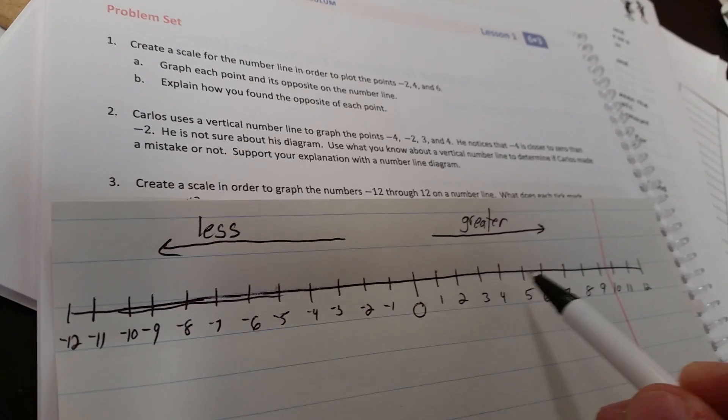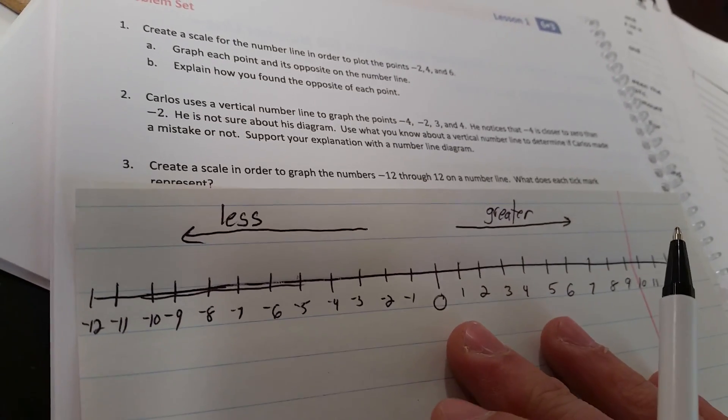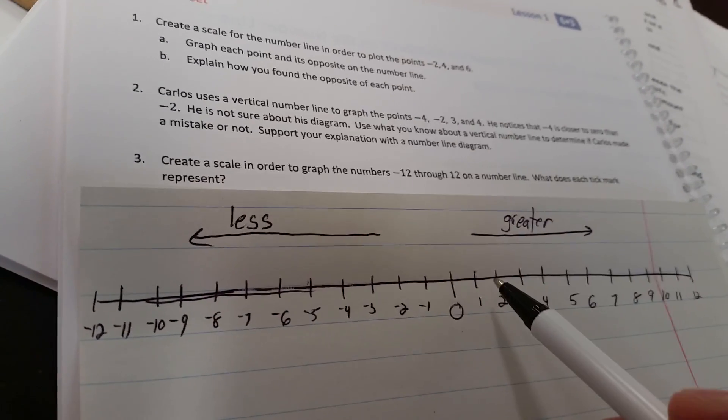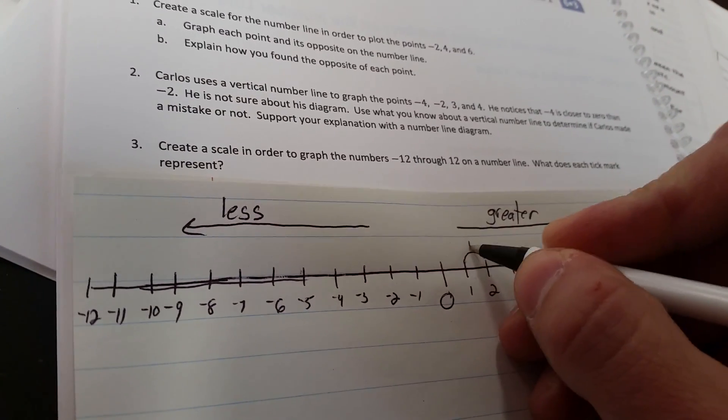So you can't have 1, 2, 3, 5, 10, 15, 20. You want to have the same scale going either way. All right, and each tick mark represents one unit. So from here to here, that's one unit.